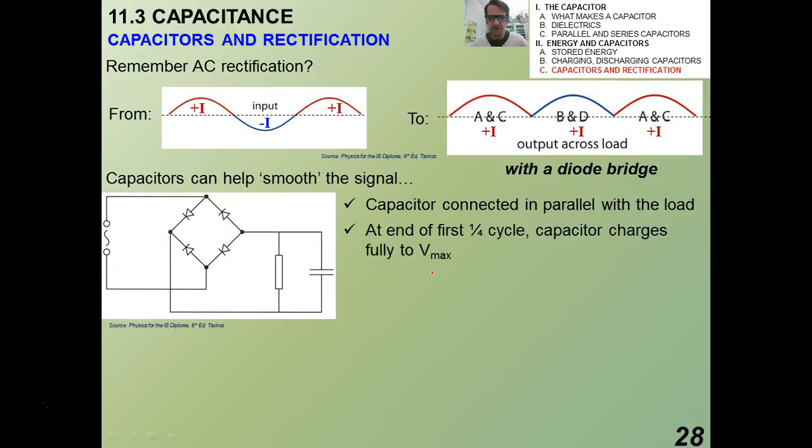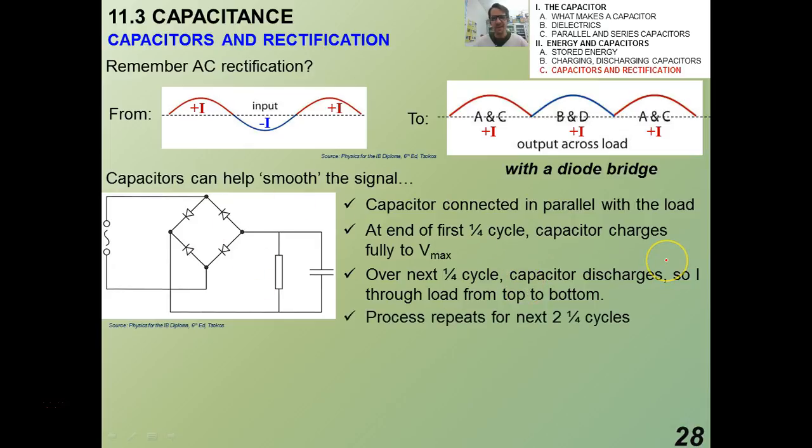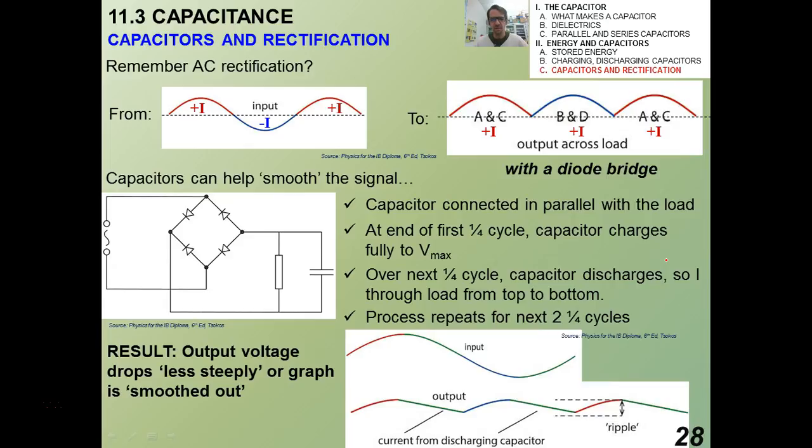And the way we do that is we connect the capacitor in parallel with the load, which in this case is shown by a resistor like this. So, at the first quarter of a cycle, the capacitor charges fully to V max. Over the next one-quarter cycle, the capacitor will then discharge. So, the current through the load goes from top to bottom in this diagram, and then this process repeats for the next two one-quarter cycles. The bottom line is, and this is, you're going to need to be able to describe this qualitatively. The output voltage ends up dropping less steeply, or the graph tends to be smoothed out.